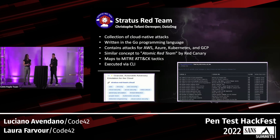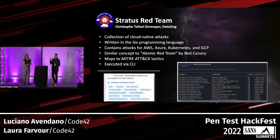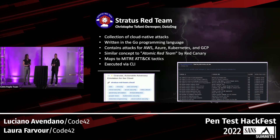Stratus Red Team was originally developed by Christoph Tafani-Deripur, an employee at Datadog and a cloud security researcher. I had the pleasure of meeting Christoph at DEF CON earlier this year. It's written in Go, so it's already an executable binary, but the source code is also up on GitHub. Think of it as a good Atomic Red Team framework but for cloud. Attack techniques are already provided for AWS, Azure, Kubernetes, and GCP.